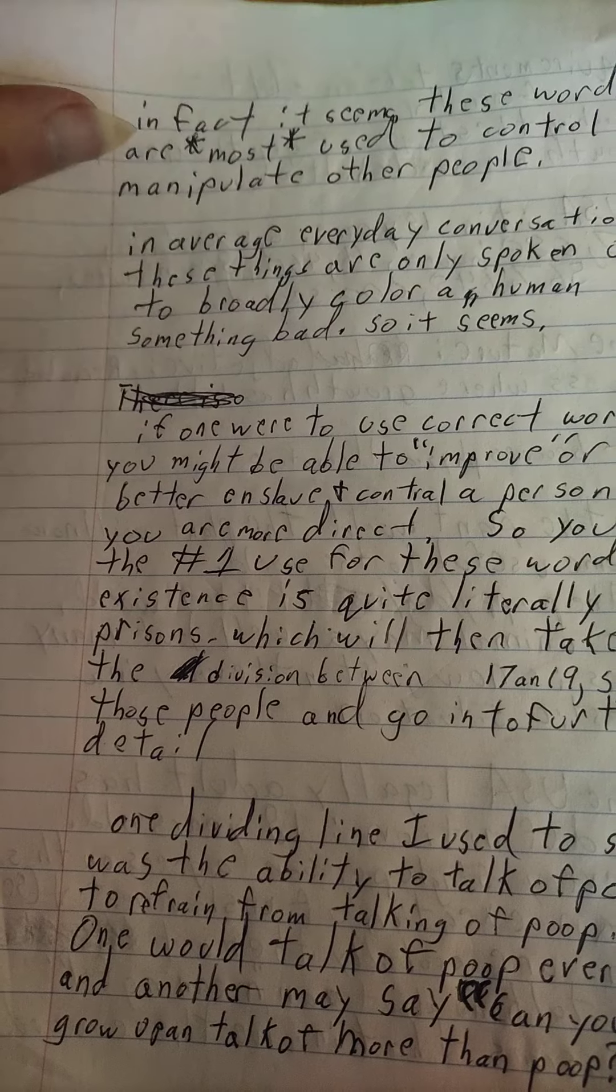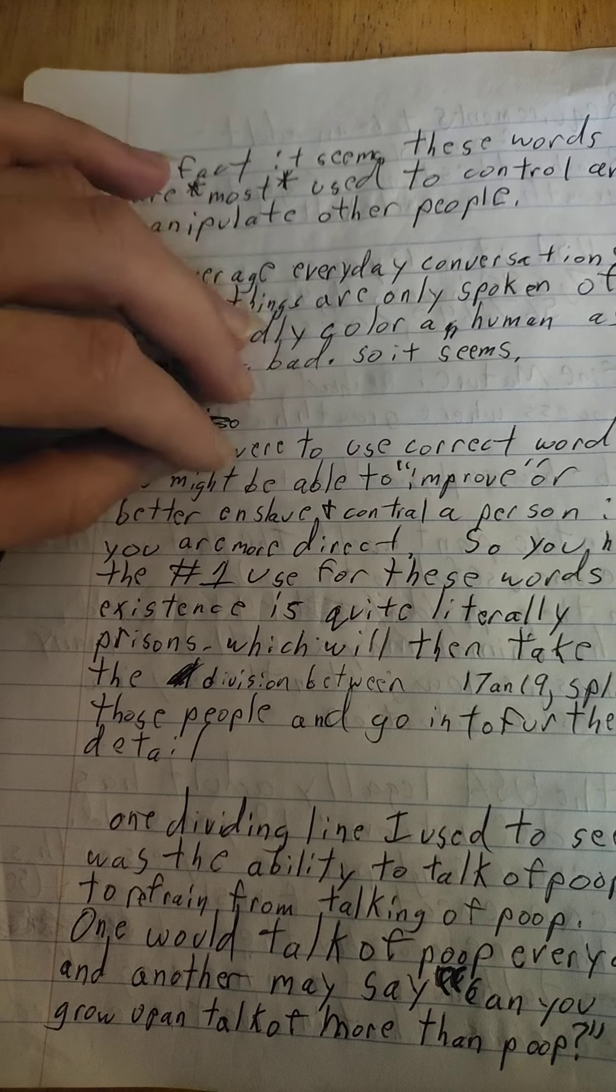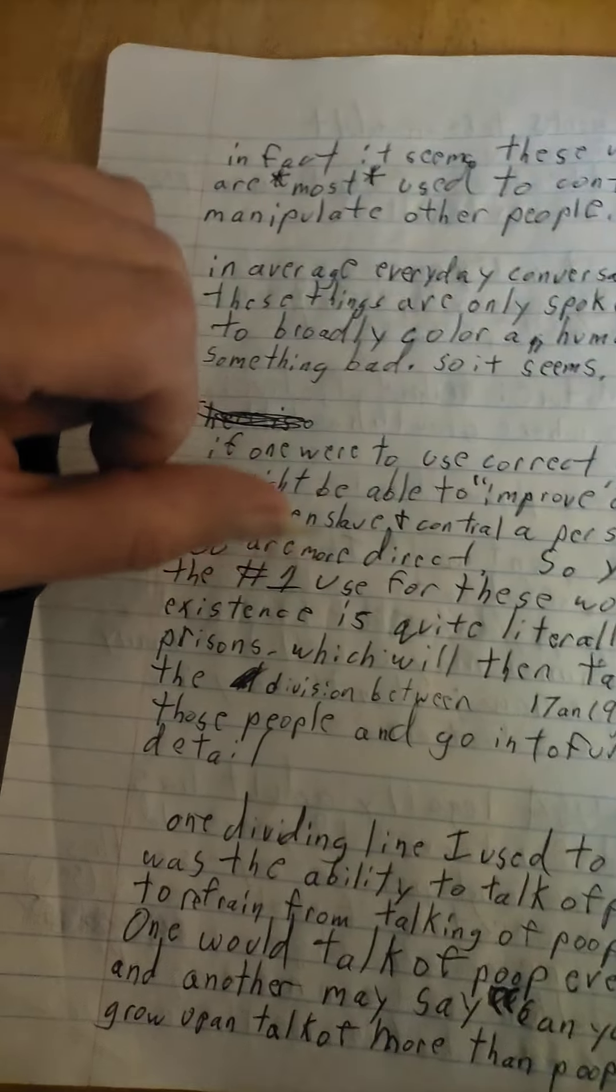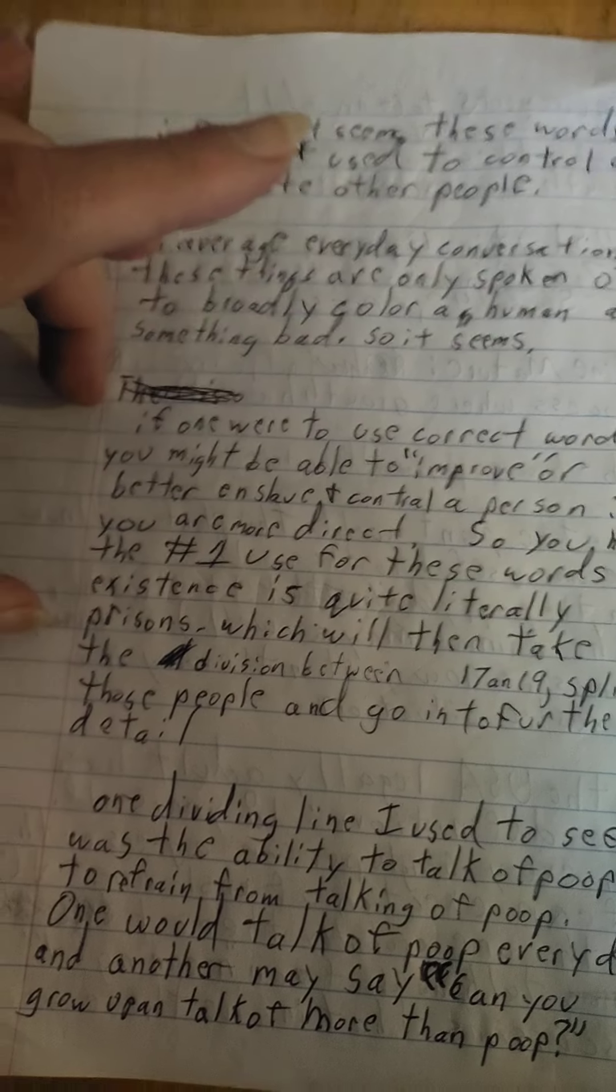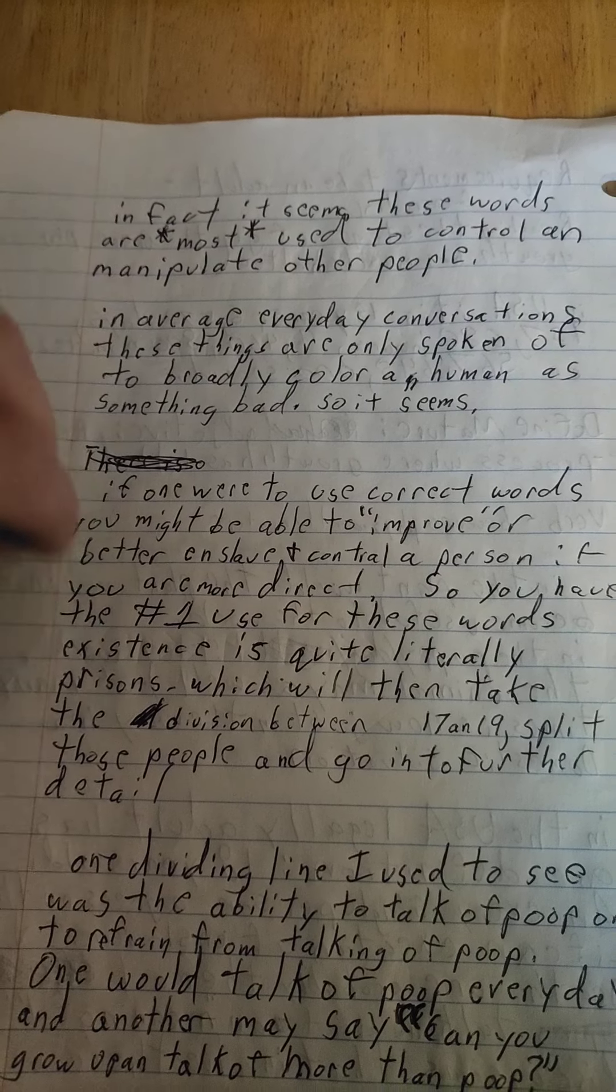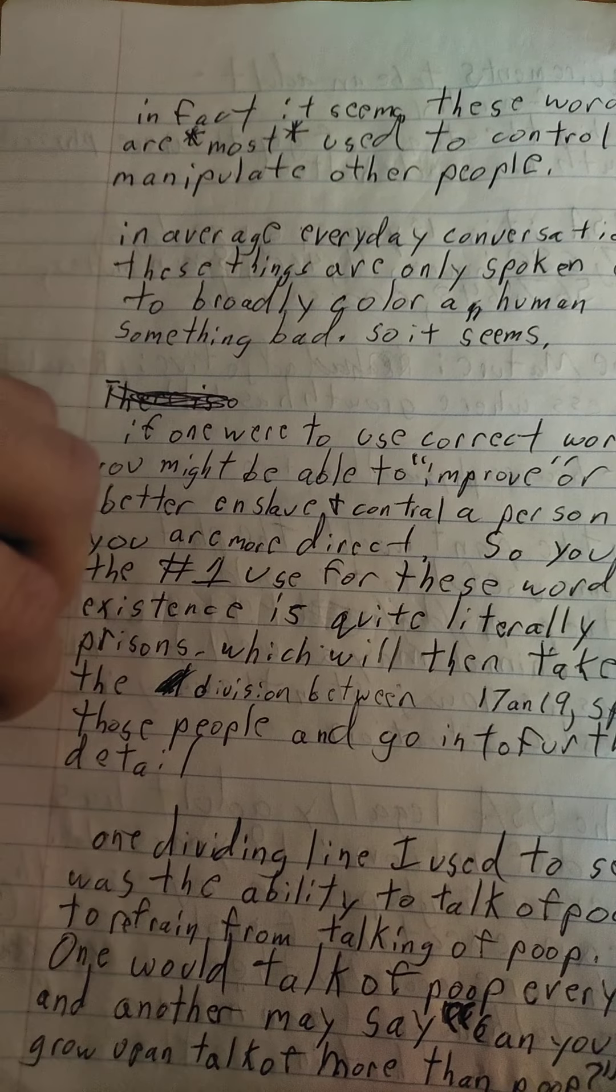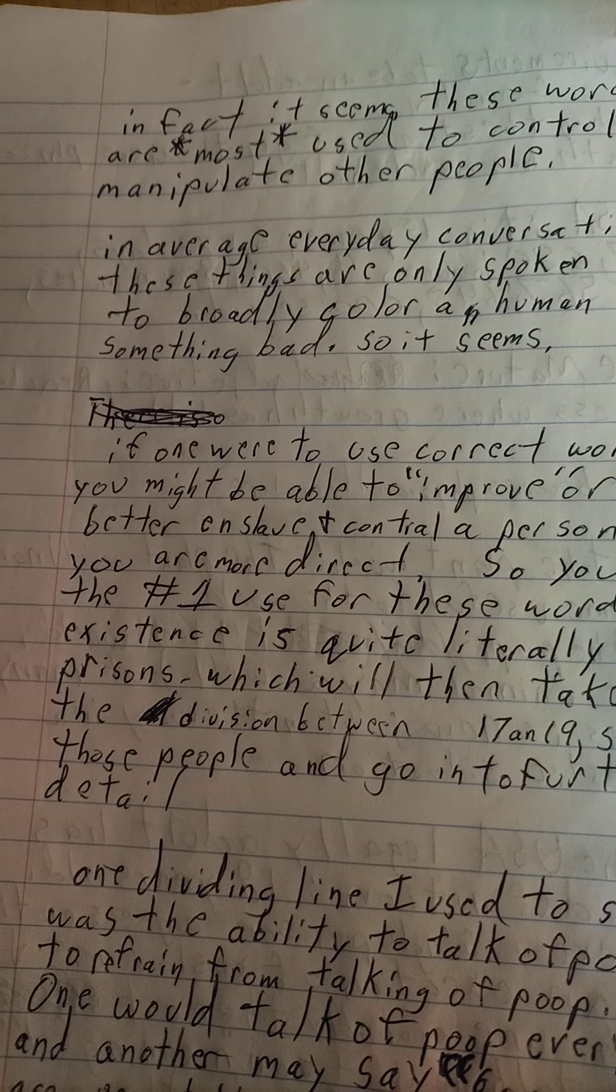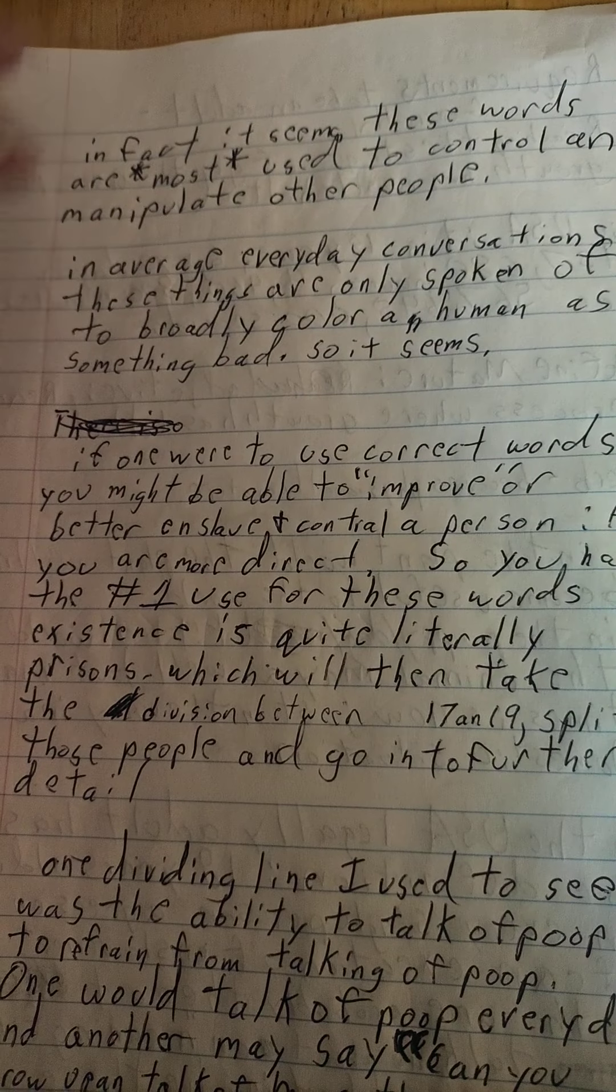The number one use for these words' existence is quite literally prisons. There's probably more people in prisons than schools, maybe I'm wrong, maybe the number one use is schools, but it's definitely up there. The whole legal system, if you include every single case that happens every day, it's judged based upon child or adult. There's more cases, more tickets issued every day. So the number one use for these words in existence seems to be quite literally prisons and the legal system.